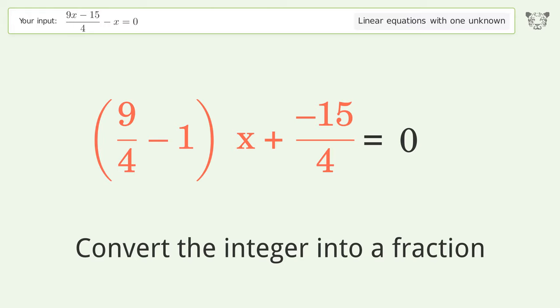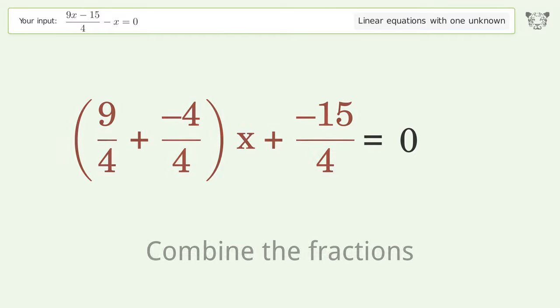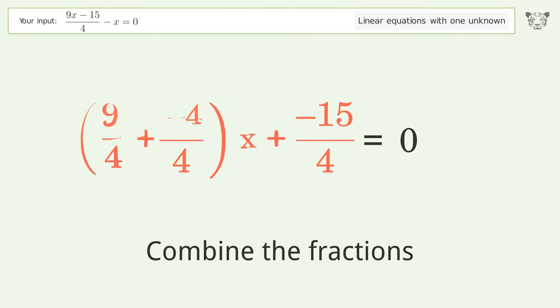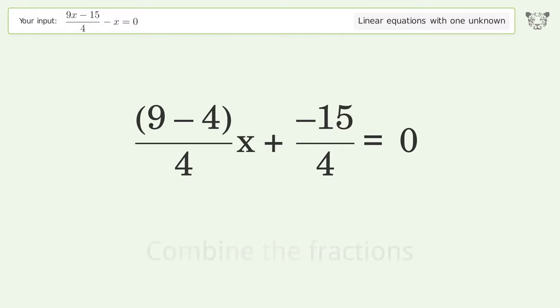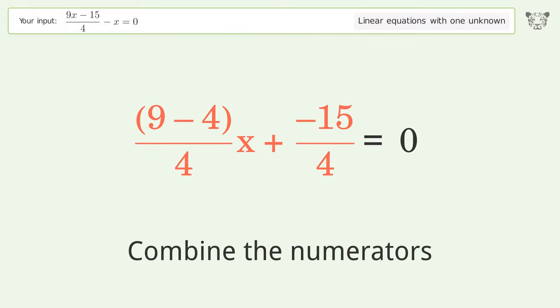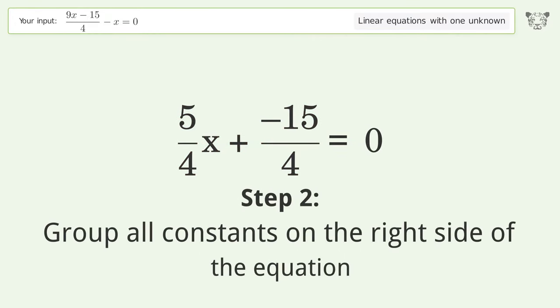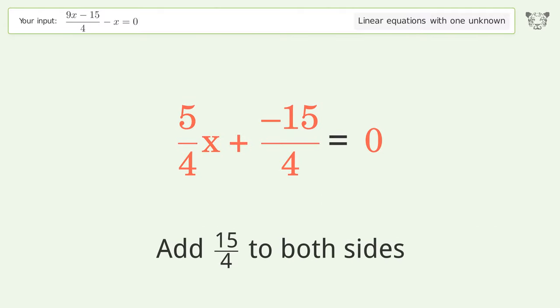Convert the integer into a fraction, combine the fractions, combine the numerators. Group all constants on the right side of the equation. Add 15 over 4 to both sides.